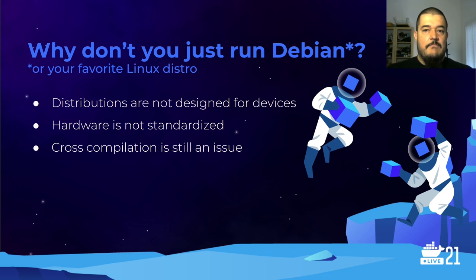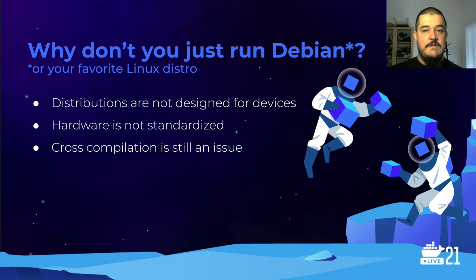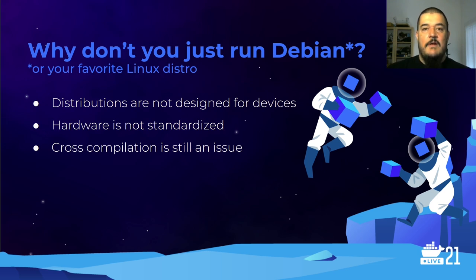There is an alternative: on PCs or servers we don't build the OS, we just run a standard distribution. Why not do this for embedded? The issue is that popular distributions like Debian are not designed for embedded devices — they are designed for server or desktop environments and are relatively large. Also, embedded hardware is not standardized the way PC hardware is; every device has different storage and peripherals, making heavy customization on top of a standard distribution quite difficult.